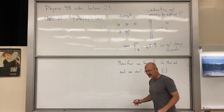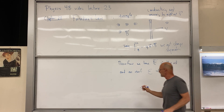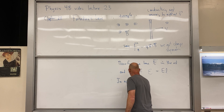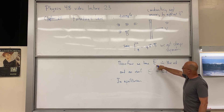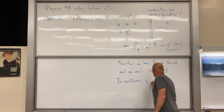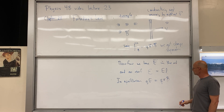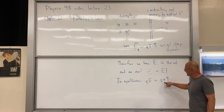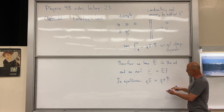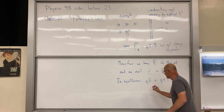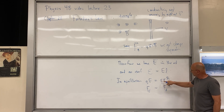As this thing moves across and we establish equilibrium, the electric force QE equals the magnetic force QVB. So E equals V times B — the electric force balances the magnetic force across the charge separation.